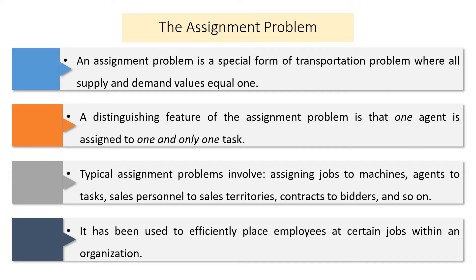A key distinction of the assignment problem is that one agent is assigned to one and only one task, and one task is done by only one agent — there is a one-to-one correspondence. Typical applications include assigning jobs to machines, agents to tasks, salespersons to sales territories, or contracts to bidders.